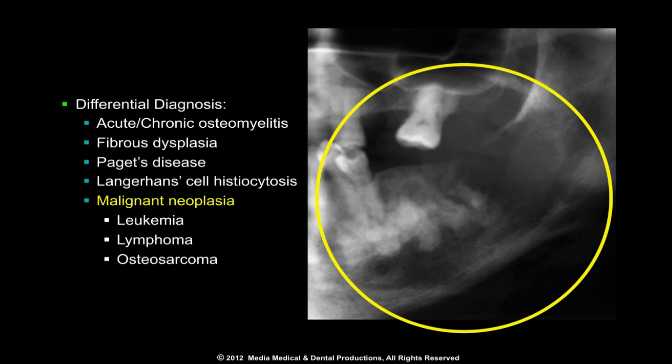Osteomyelitis may be distinguished from malignant neoplasia by patient history and observation of the pattern of bone destruction. If periosteal bone has been destroyed, malignancy cannot be ruled out.